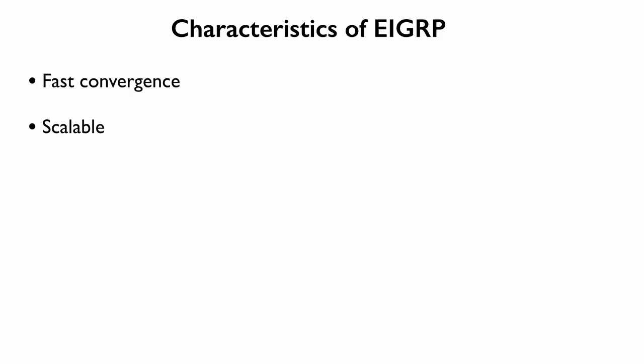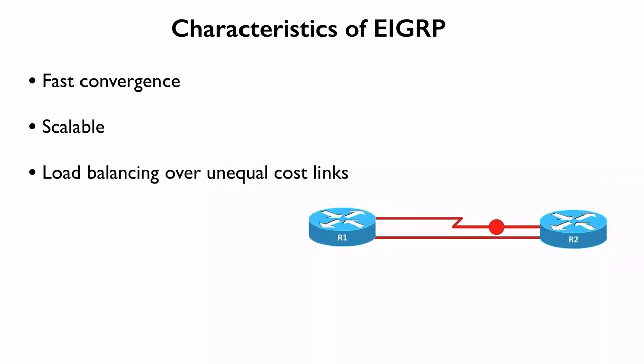And something that EIGRP can do that OSPF cannot do is to load balance across unequal cost paths. If I have more than one path to get to a destination network, EIGRP by default is going to select the best path, the path with the lowest metric. However, using the variance option, as we're going to be talking about later in this video course, we could load balance across different paths even though they have different metrics.